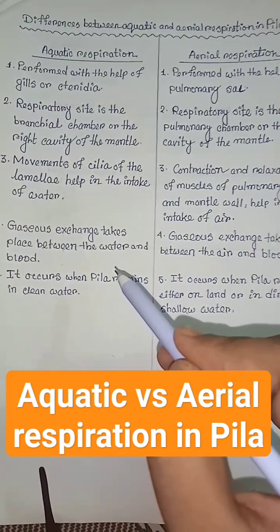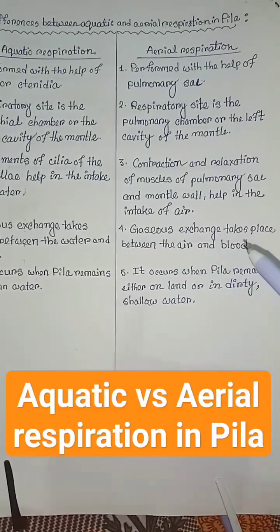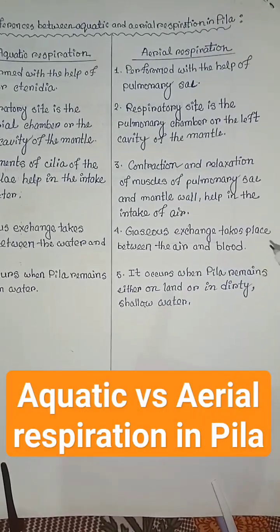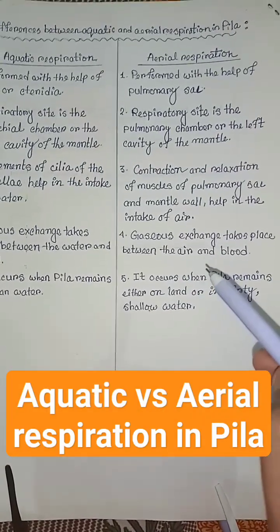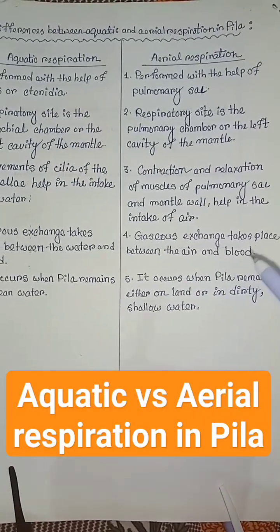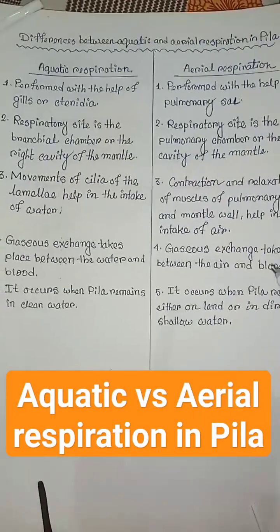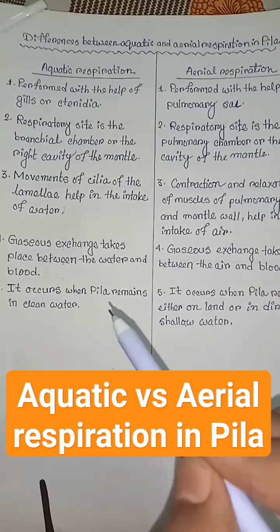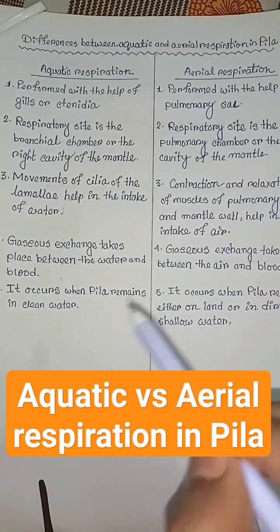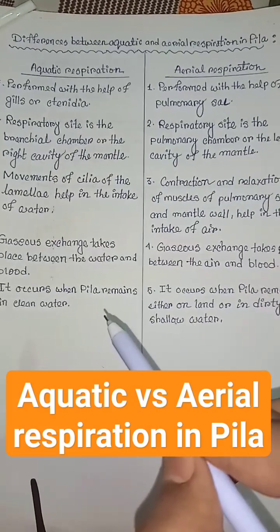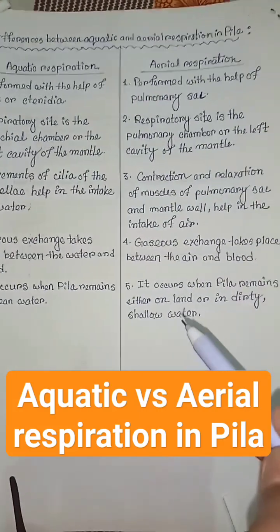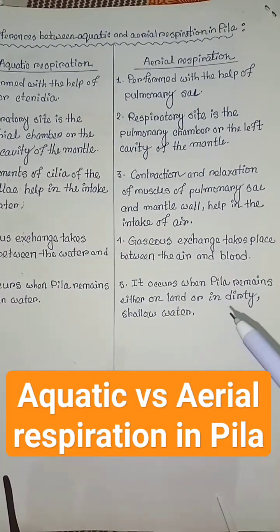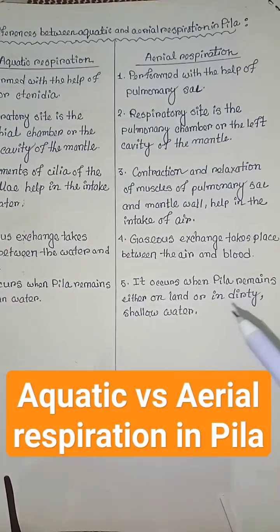Gaseous exchange takes place between the water and blood in aquatic respiration, but between the air and blood in aerial respiration. Aquatic respiration occurs when Pila remains in clean water, but aerial respiration occurs in dirty water.